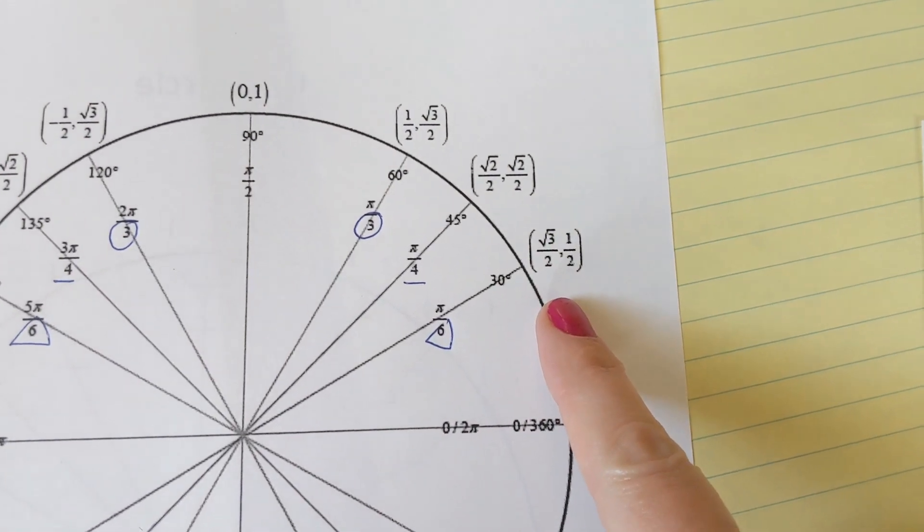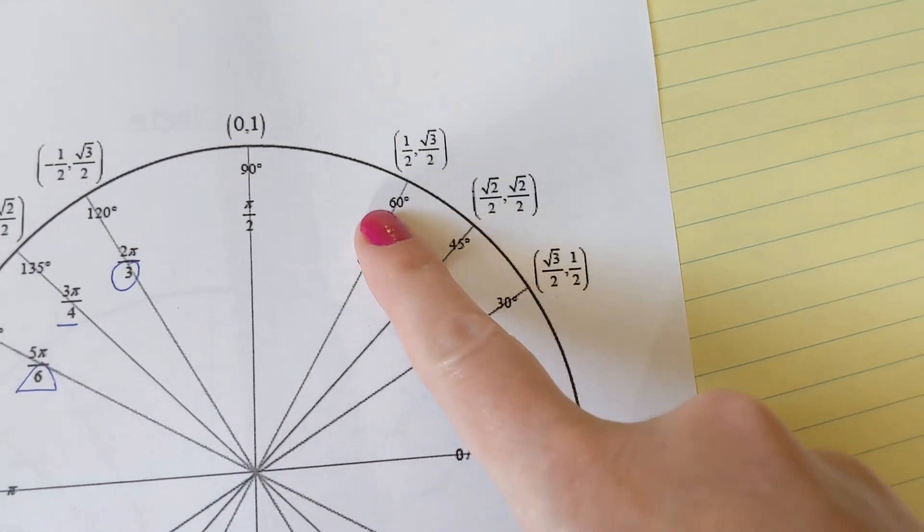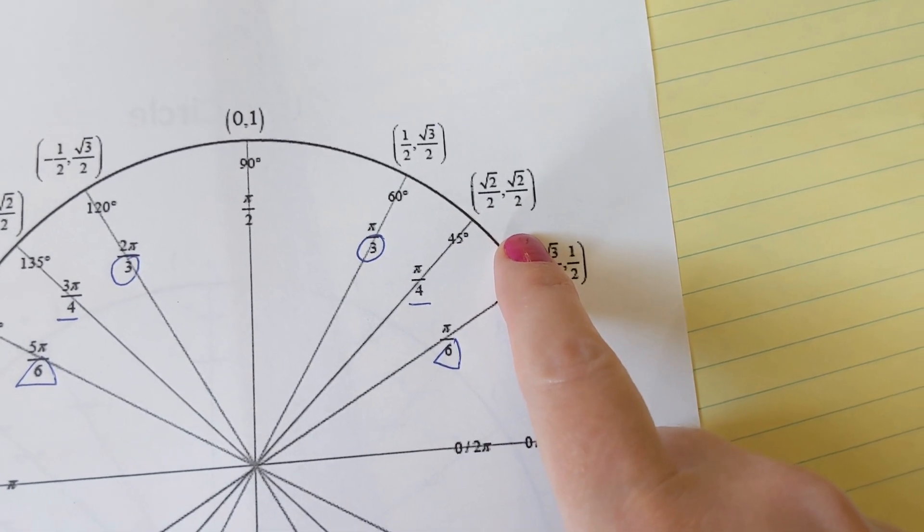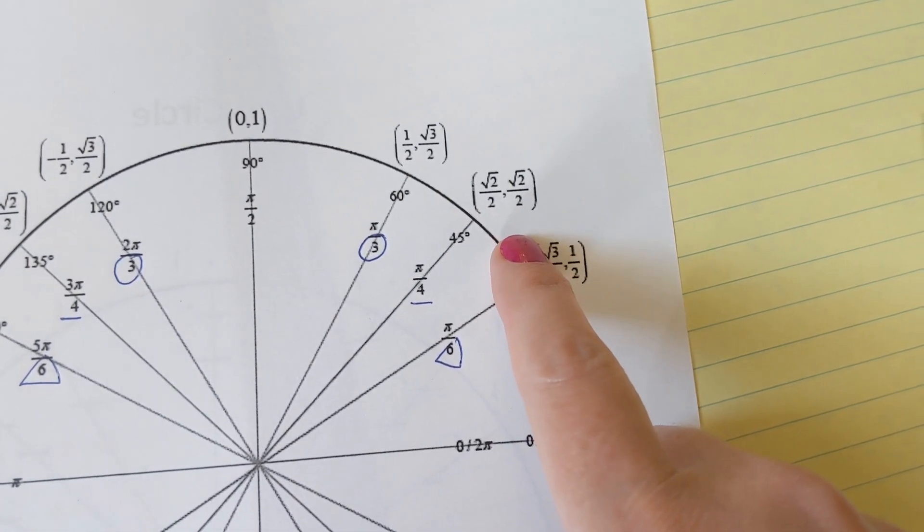We got the 30 degree angle, radical 3 over 2 and a half, and then flip it for the 60, 1 half and radical 3 over 2. And all the 45 degree angles are radical 2 over 2, radical 2 over 2.